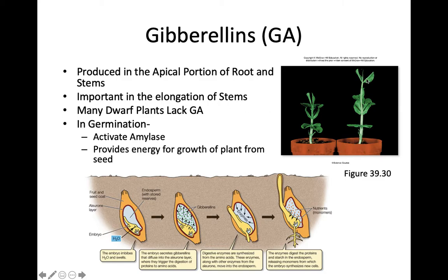Gibberellins are produced in the apical portion of the root and in the stems, and are important in the elongation of stems for growing upwards. Here is a dwarf pea plant and a normal pea plant — a lot of dwarf plants actually lack gibberellin. You might have noticed when you grew your pea plants in lab that applying gibberellic acid to the dwarf pea plants made them grow a little taller than your control plants. In germination of seeds, gibberellins activate amylase, which breaks down the endosperm's stored energy reserves to provide energy for the growing plant.